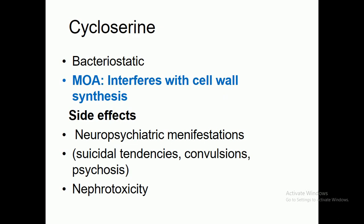The first second-line drug is cycloserine. Cycloserine belongs to second-line anti-tubercular drugs. Cycloserine is bacteriostatic, meaning it can only inhibit the growth of microorganisms but cannot kill them completely, including their spores.